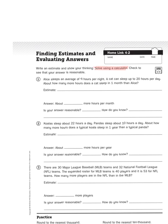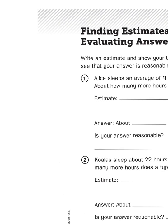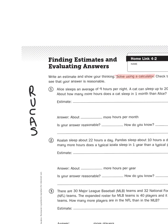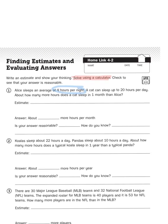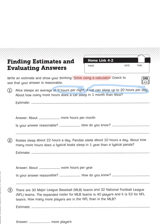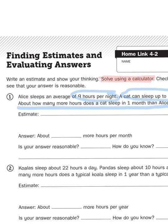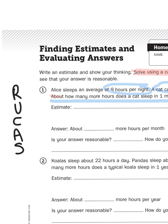Before we approach this problem, we need to utilize the strategy of RUCKUS — that is, reread the problem, underline the question, circle the important parts, come up with an action plan, and then solve. So let's reread: Alice sleeps an average of nine hours per night. A cat sleeps up to 20 hours per day. About how many more hours does a cat sleep in one month than Alice? I want to point out a couple of key phrases. The first is the word "about." When I see the word "about," I know I'm estimating — an exact answer isn't required.